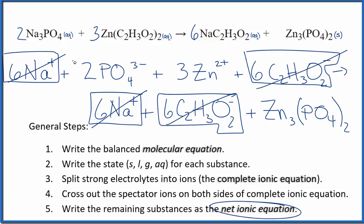What's left is the net ionic equation for sodium phosphate plus zinc acetate. I'll clean it up and write the states. We'll have our net ionic equation.